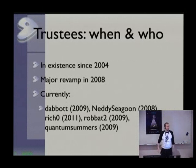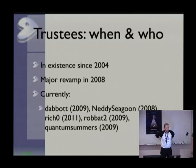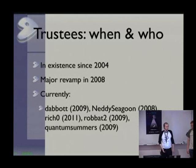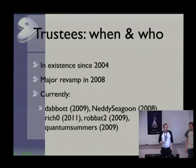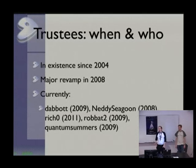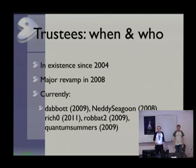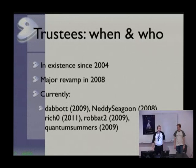Hi, I'm Robin, from Gen2. I'm going to carry on with the trustees. The trustees came into existence in 2004, and they had a much rougher start than the council. The trustees, from 2004 to about 2008, is a black hole of Gen2 history.